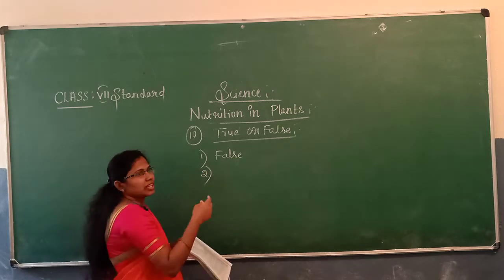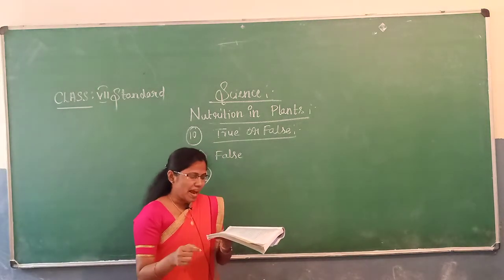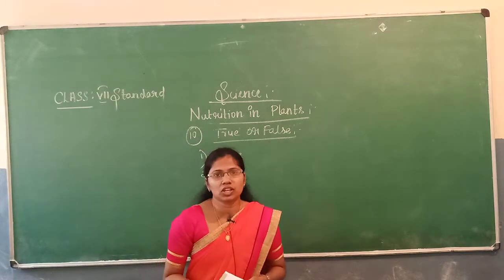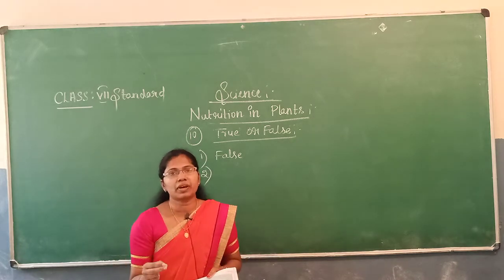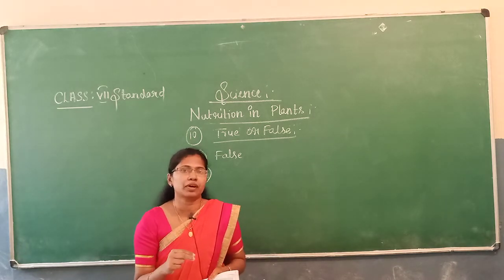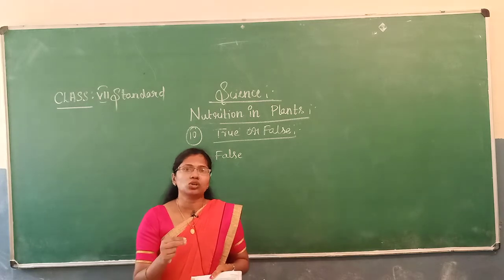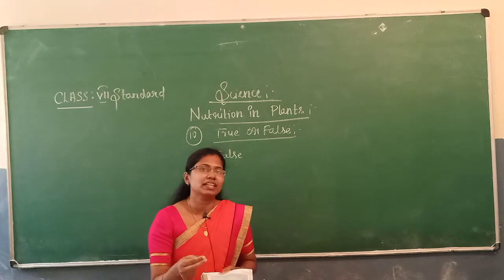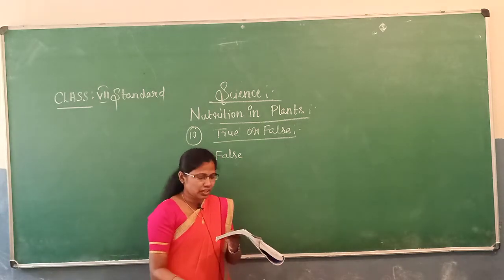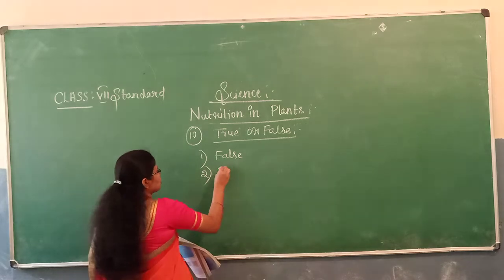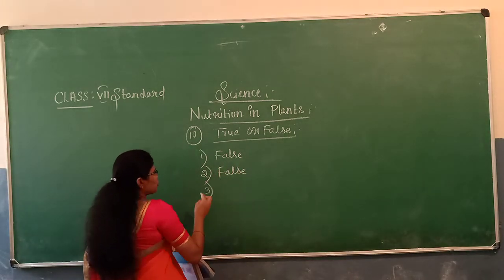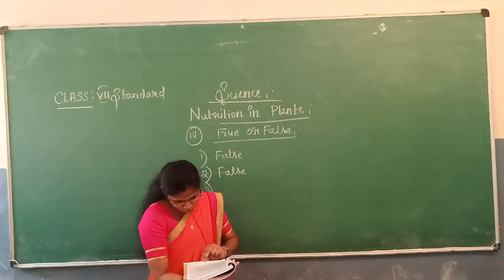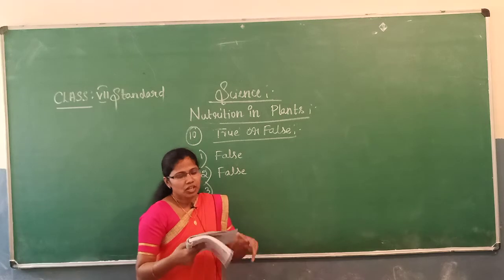The second statement: the plants which synthesize their own food are called saprotrophs. Plants that prepare their own food are called autotrophs, not saprotrophs. Saprotrophs depend on dead and decaying material. So this second statement is also false.